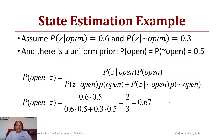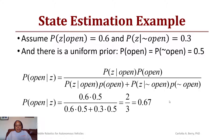We use a uniform prior, assuming a 50-50 chance of the door being open or closed. The probability of the door being open given that sensor measurement is found by the probability of Z given the door is open, times the probability of the door being open, divided by the sum: probability of Z given the door is open times 0.5, plus probability of Z given the door is closed times 0.5. So we get 0.6 times 0.5 over 0.6 times 0.5 plus 0.3 times 0.5, giving a 0.67 probability that the door is open given measurement Z.